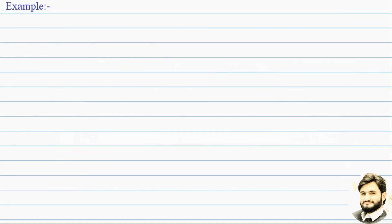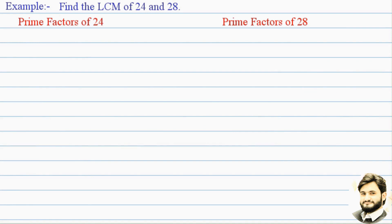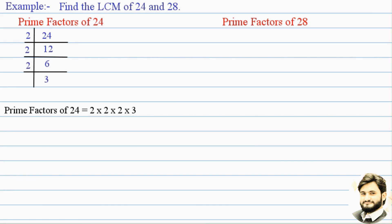Example: find the LCM of 24 and 28. First we find the prime factors of 24 and 28. For 24: 24 divided by 2 we get 12, 12 divided by 2 we get 6, and 6 divided by 2 we finally get 3. So the prime factors of 24 equal 2 × 2 × 2 × 3.